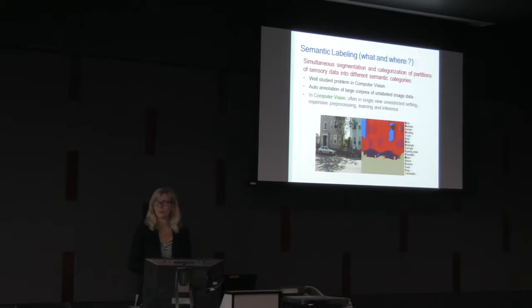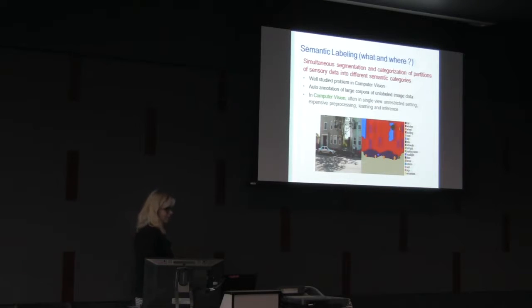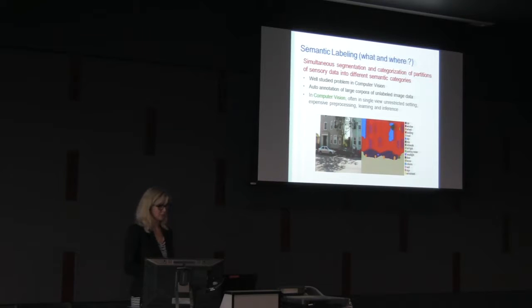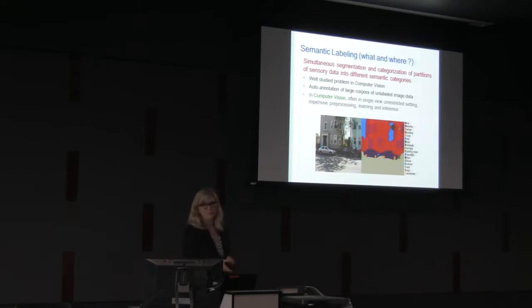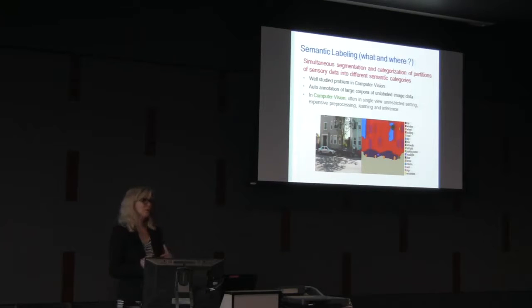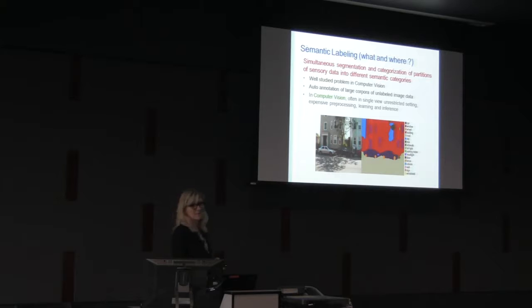So what is the problem of semantic labeling? The problem of semantic labeling is the problem of simultaneous segmentation and categorization of partitions of sensory data into different semantic categories. This is a very well studied problem in computer vision, and I would like to spend a little bit of time on how tackling this problem in robotics is different and more about the challenges.